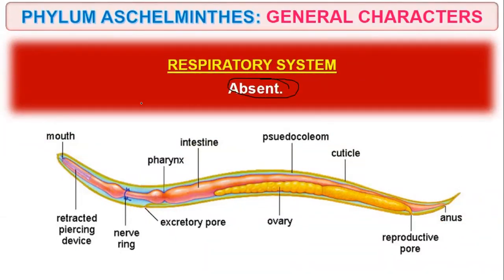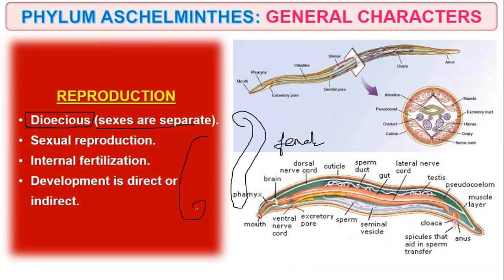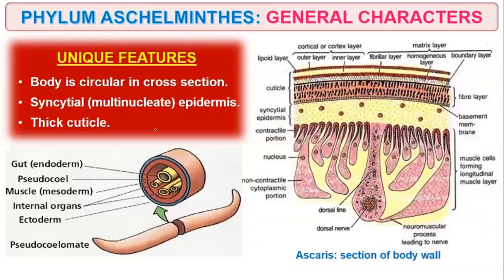Respiratory system is absent and circulatory system is absent. Reproduction is dioecious — sexes are separate. Females are long and straight, males are short and curved. They show sexual reproduction with internal fertilization. Development may be direct or indirect — either without larval formation or with larval formation.